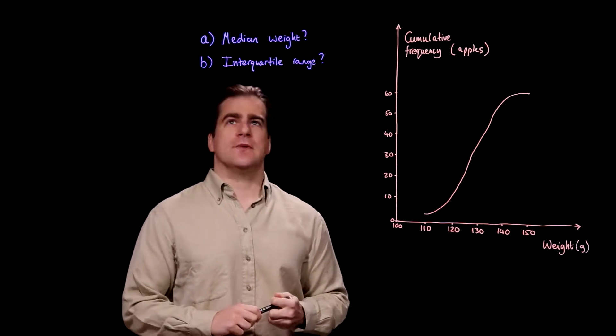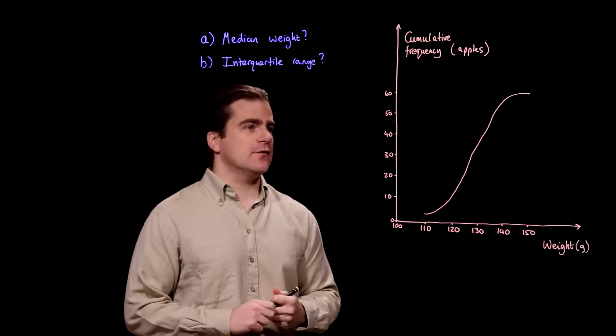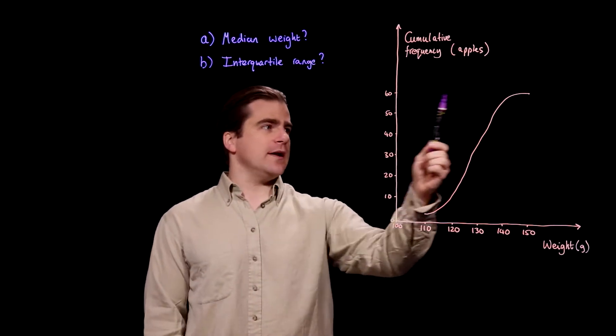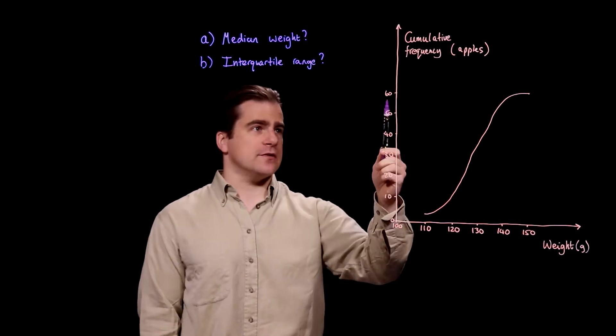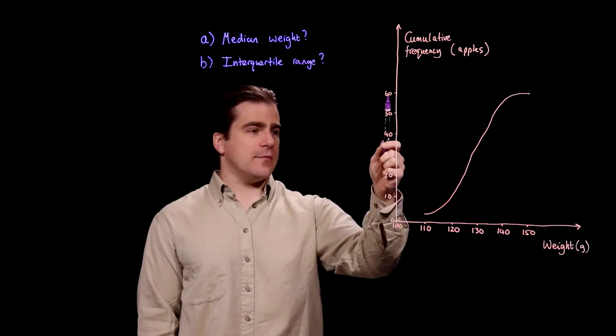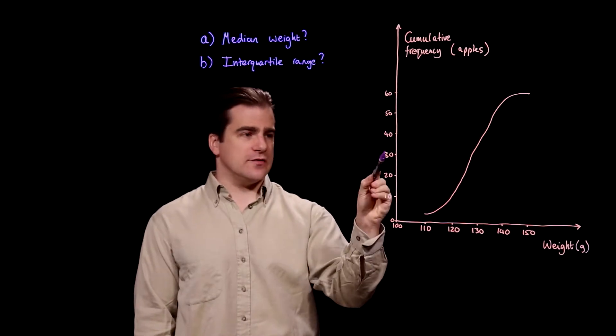So, median weight. To find the median, you first look to see how many things you've got, in this case apples. We have a total of 60 apples and you divide that by 2, which is 30.